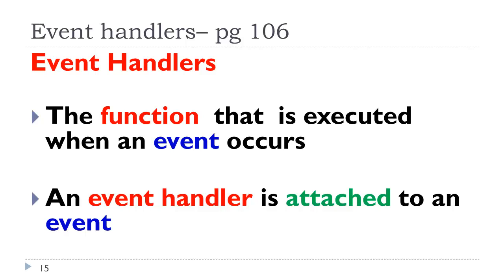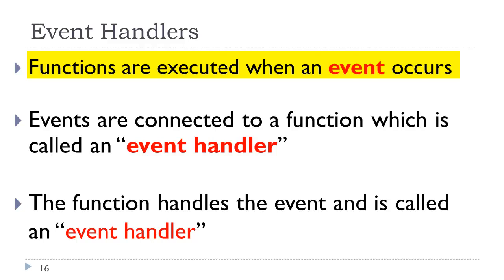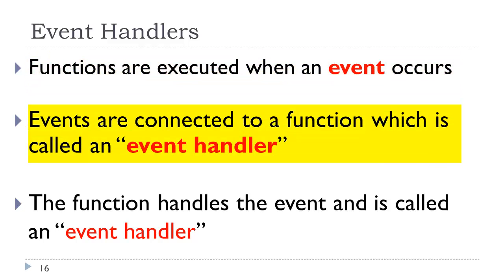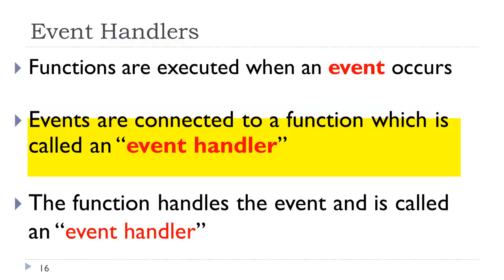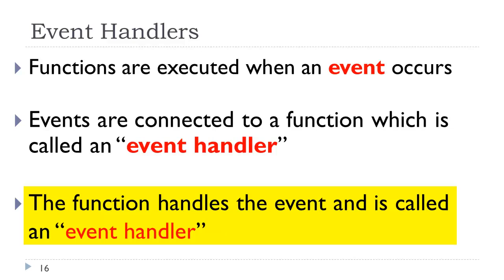Event handlers — this is a term that can be confusing. An event handler is typically a function that is executed when an event occurs. So you hear this thing about connecting events to an event handler — the event handler is the function that will handle the event. They're attached to an event essentially by an equal sign. So we have events that are user actions or page loads. Functions are executed or called when an event occurs. Events are connected to the function — the function is called the event handler. You might also hear the term 'the function handles the event'.